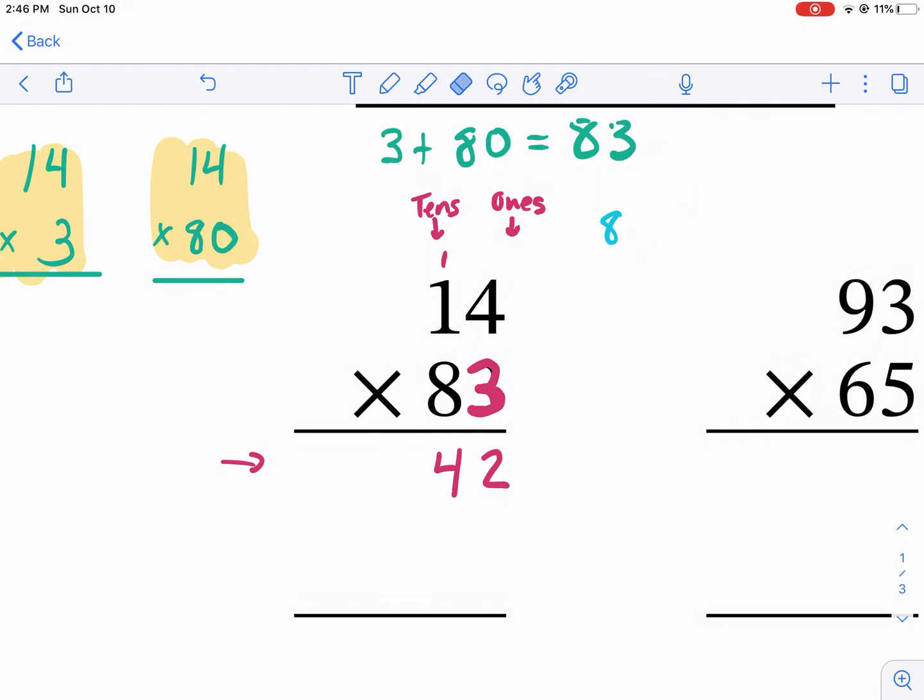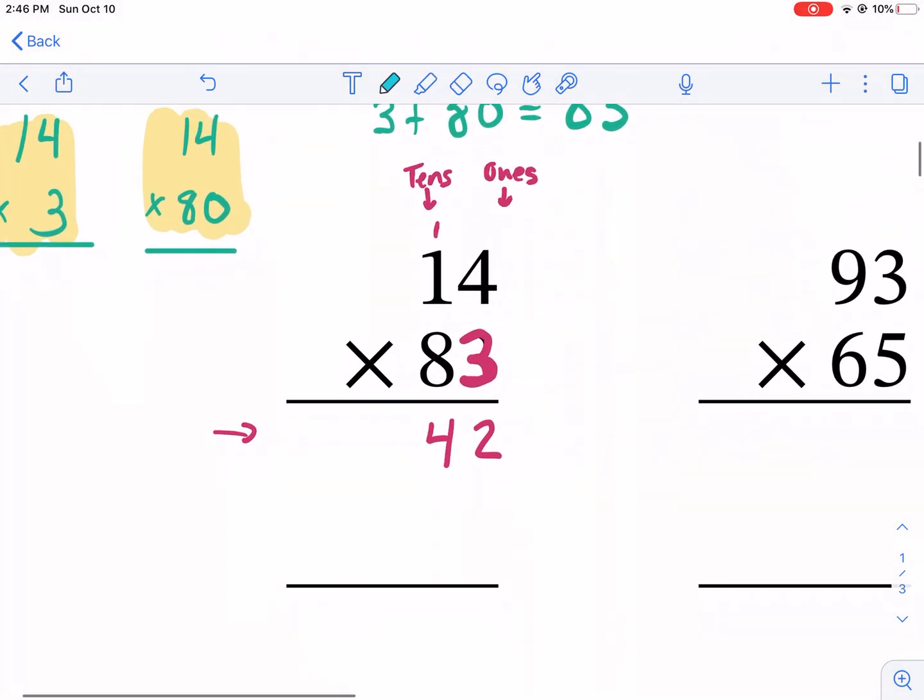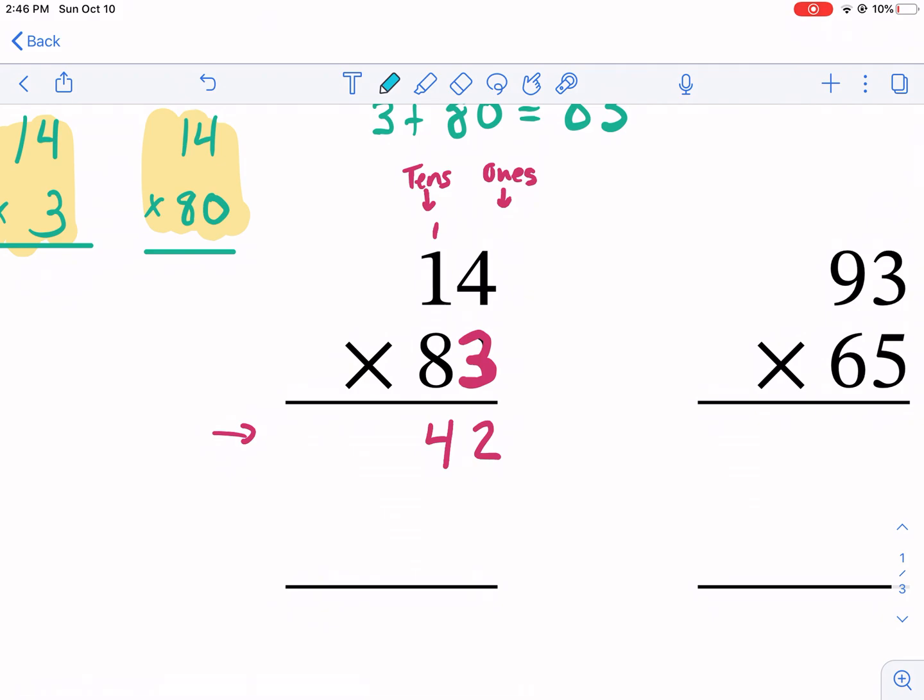I have a low battery. I'm going to try to finish this before. So we have 14 times 80 now. What I need to do is I need to indicate that it's in the tens place by putting a zero first. That lets me know that we're talking about the tens place. We're multiplying by 80. So now I can just go ahead and do four times eight. The four times the eight, the ones place times the eight, and that gives me 32.